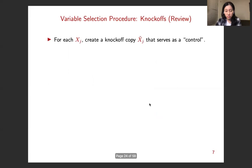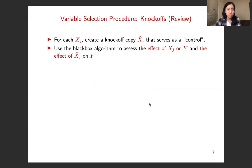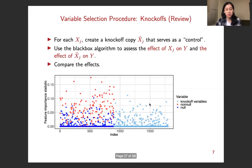So the idea of the knockoffs is like this. It constructs a knockoff copy xj tilde for each variable xj and it serves as a control. And it uses the black box algorithm to assess the effect of xj on y and the effect of xj tilde on y simultaneously. And then it compares the effects. So as illustrated by this plot, the red dots and the dark blue dots are the original variables, while the shallow blue dots are the knockoff variables. So from the practitioner's point of view, she cannot distinguish the dark blue ones from the red ones because she does not know the ground truth, but she has access to the shallow blue ones.